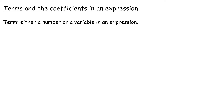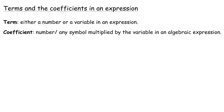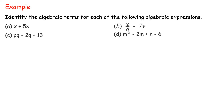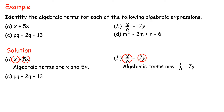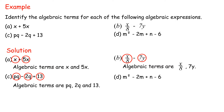Terms and coefficients in an expression. A term is either a number or a variable in an expression. A coefficient is the number multiplied by the variable in an algebraic expression. Example: Identify the algebraic terms for each of the following. A: X plus 5X — algebraic terms are X and 5X. B: X over 8 minus 7Y — algebraic terms are X/8 and 7Y. C: PQ minus 2Q plus 13 — algebraic terms are PQ, 2Q and 13. D: M squared minus 2M plus N minus 6 — algebraic terms are M², 2M, N and 6.